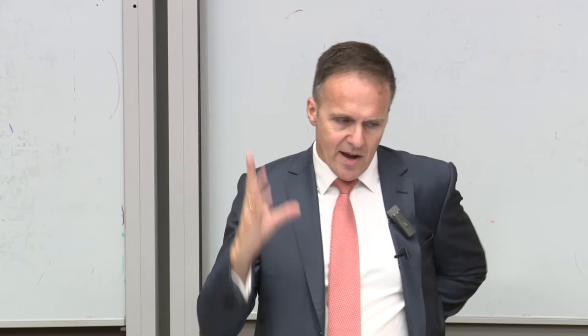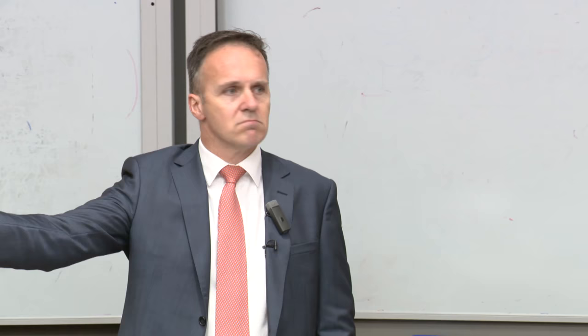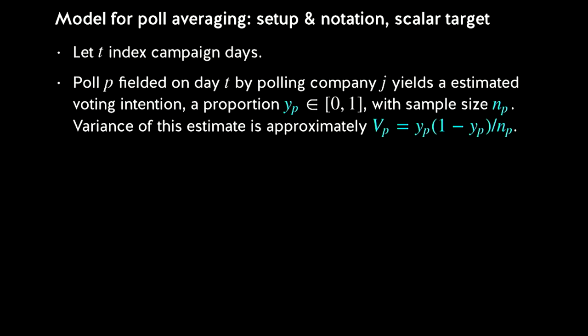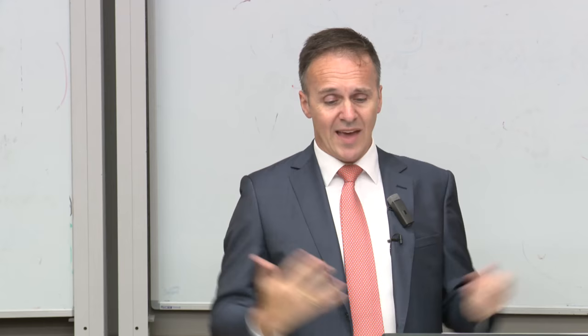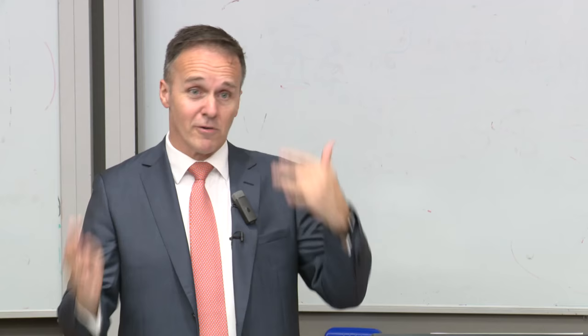For the scalar target — a single quantity, vote share for party X over time — let T index the campaign days. Poll P is fielded on day T by polling company J, and we get a number. We use proportions rather than percentages. The poll comes with sample size N — sometimes the paper won't even tell you that. We use the crude but reasonable variance approximation Y(1−Y)/N. That's the observed data.